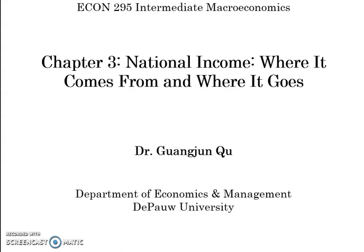This chapter and the next two — chapters three, four, and five — we are going to look at these three aspects of our macroeconomy more in depth. This chapter three is about national income: where it comes from and where it goes.